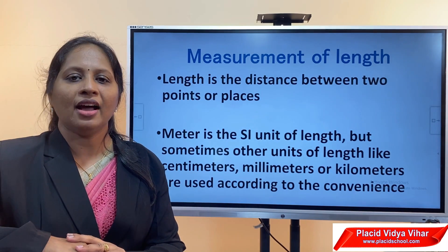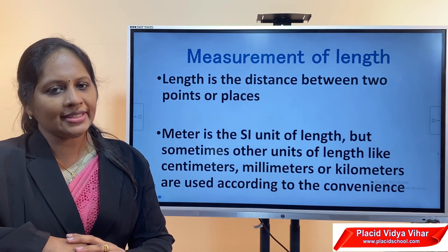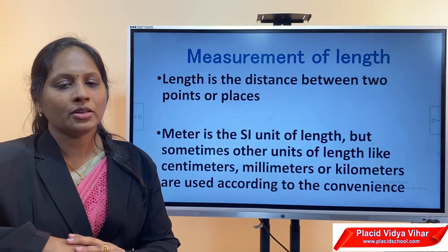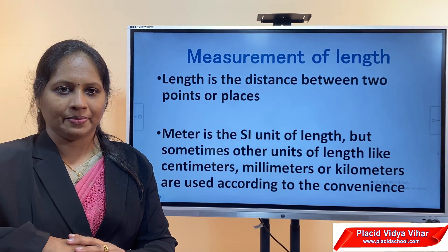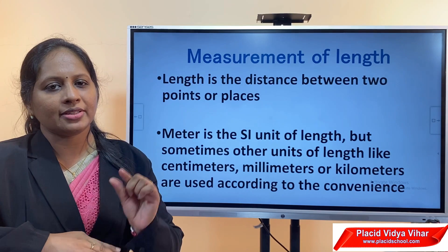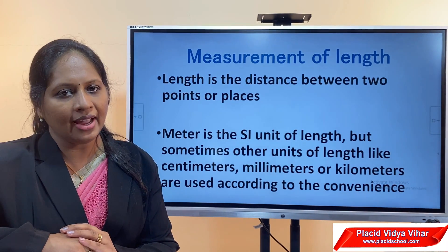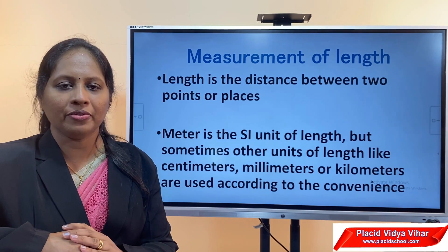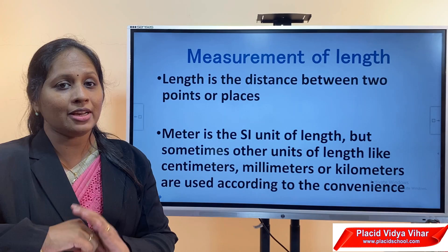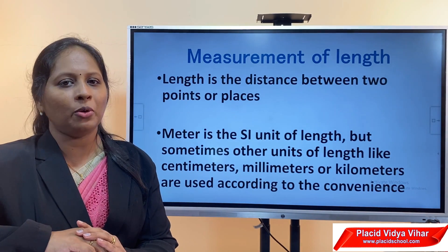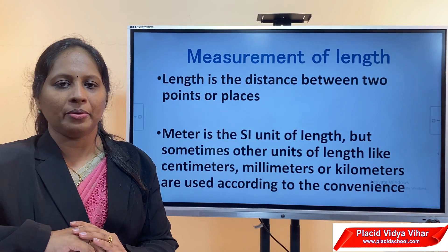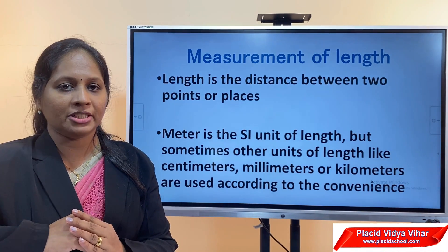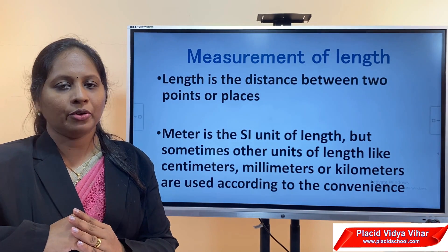Which are the multiples and submultiples of meter? For example, if you want to measure the length of a pencil, the length of the pencil is expressed in centimeter. So centi is a submultiple of meter. If you want to measure the thickness of a coin, the thickness is expressed in millimeter, so milli is a submultiple. But if you want to express the distance between two places, you express the answer in kilometer — kilo is a multiple of meter. So according to the size of the object or convenience, we use multiples and submultiples of meter for the measurement of length.